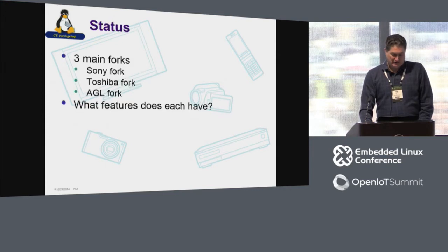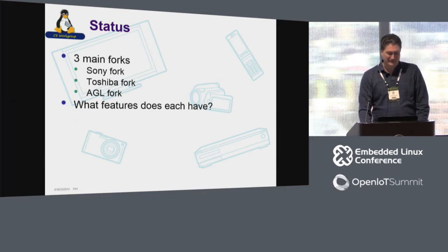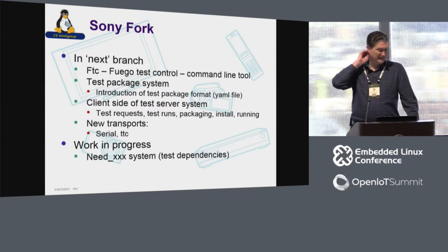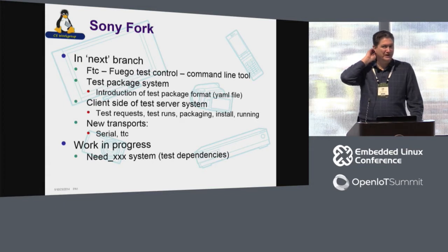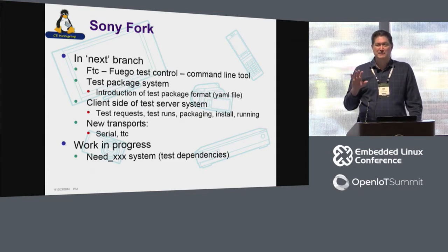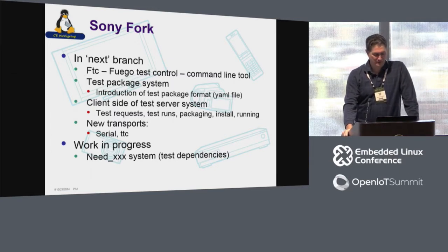The status, really quickly. There are three main forks, which is bad. I'm calling them the Sony fork, the Toshiba fork, and the AGL fork. I want to talk about what features each one has and kind of where they're at. The Sony fork — I'm the maintainer of that. Most of the stuff I've been working on is in the next branch. I've got a command line tool that's working pretty well. A lot of this is prototype code, so some of it's not really ready to be released to the public yet, but it's pretty close and shows proof of concept.